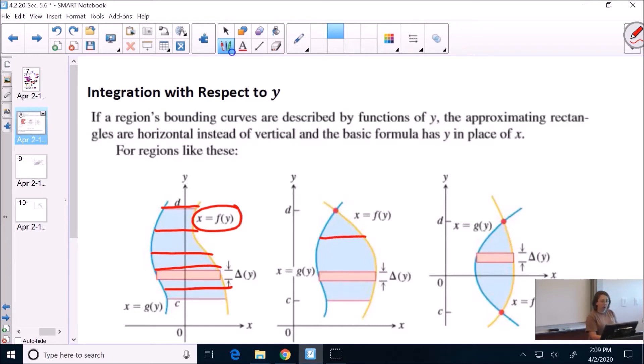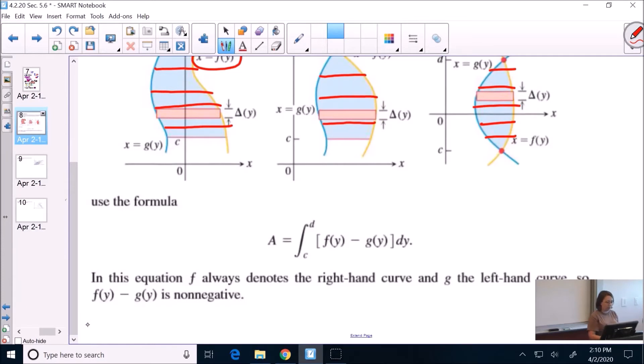That's why it's much better to look left and right. Always the same curve on the left, always the same curve on the right, no matter which y value you draw a line in. If a region's bounding curves are described by functions of y, the approximating rectangles are horizontal instead of vertical, and the basic formula has y instead of x. I'm just saying, look left and right. Is it bounded by curves left and right? Or is it bounded up and down? That's going to be your determining factor.